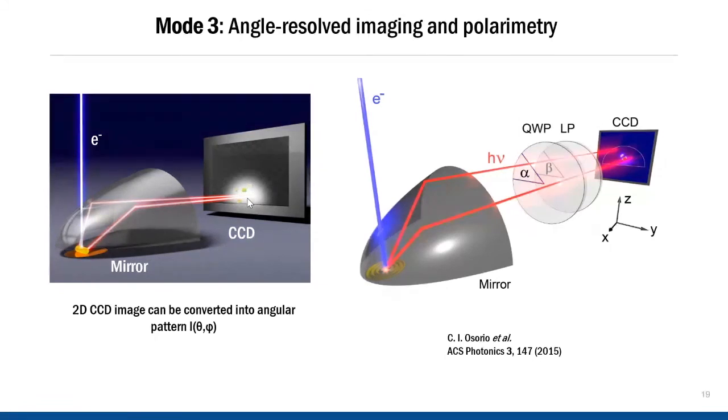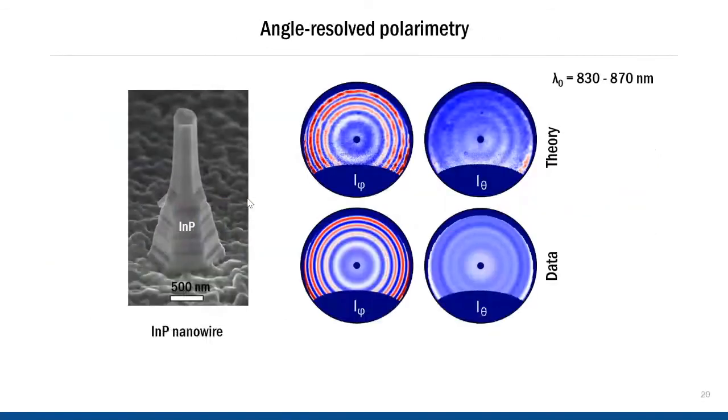Regarding the imaging parameters, in angle-resolved imaging, the CL signal that we collect is filtered with respect to the emission angle. So it's slower than spectroscopy—it's about 10 to 50 times the time taken for spectroscopy, because it takes longer to build up sufficient signal in each angle. Here's an example of such a measurement that I'll describe briefly. This is an indium-phosphide nanowire. And this geometry that you see here has a strong polarizing effect on the band edge emission. So these are the angle-resolved polarization images: I theta and I psi. You can see that the CL is mostly polarized in the azimuthal direction, and that's because of the optical modes available in this wire. The data also match very well with the theoretical prediction, so it's very valuable information to have about an emitter.